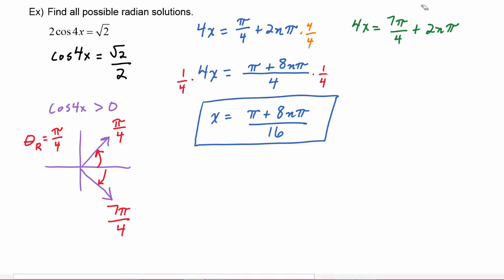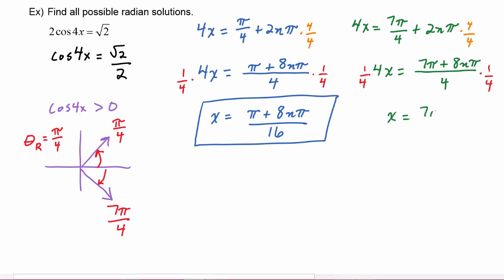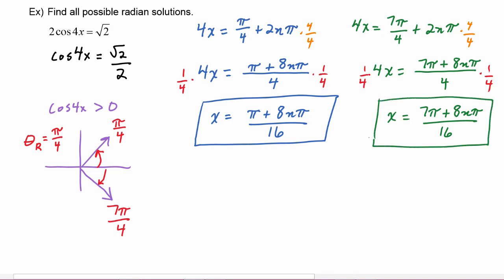For the second equation, we again get a common denominator of 4 on the right-hand side, giving 7π plus 8nπ over 4. The left-hand side is 4x. Multiplying both sides by one-fourth gives x equals 7π plus 8nπ over 16. That is the other formula which will generate all the possible radian solutions to this equation.